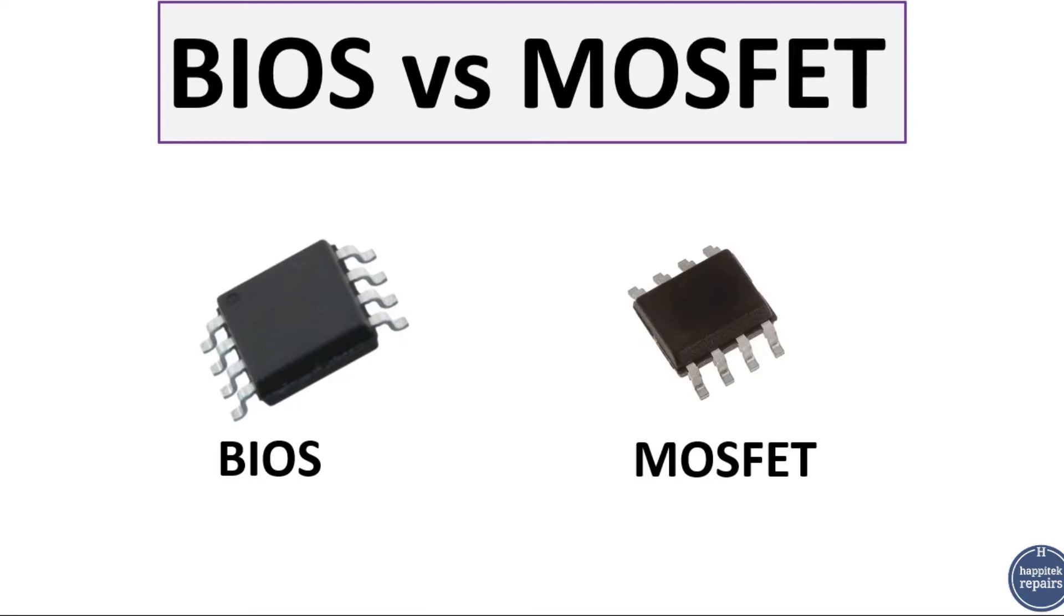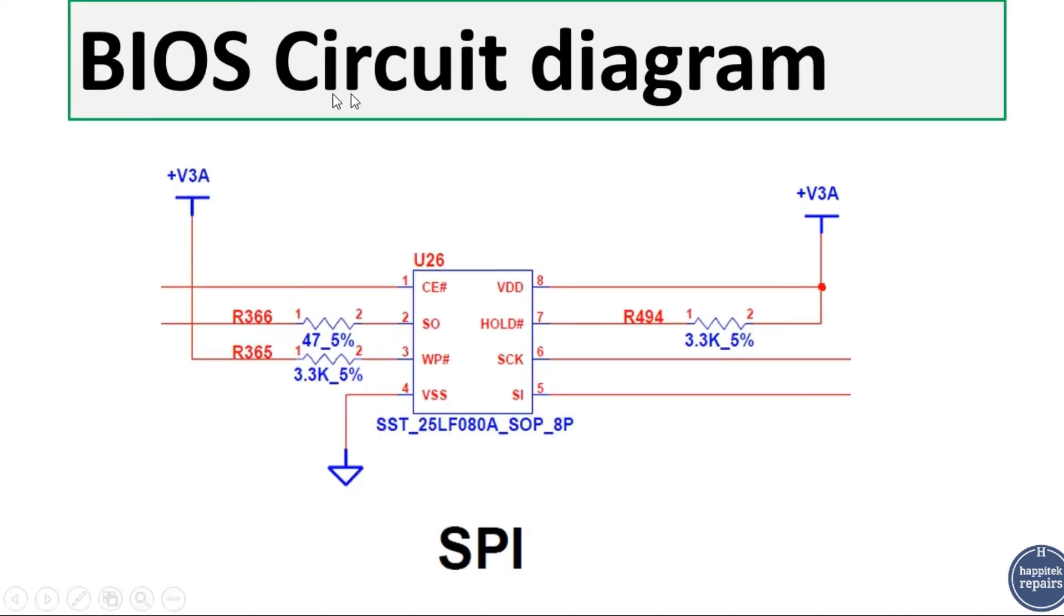So here, as you can see, this is the BIOS circuit diagram. The SPI also means BIOS. As you can see, the BIOS contains eight pins. This is an eight-pin BIOS. Of course there are other types of BIOS. This is U26, the reference of the BIOS in the motherboard. Here we have the part number of the BIOS, and here we have for each pin the signal, the name of the signal.